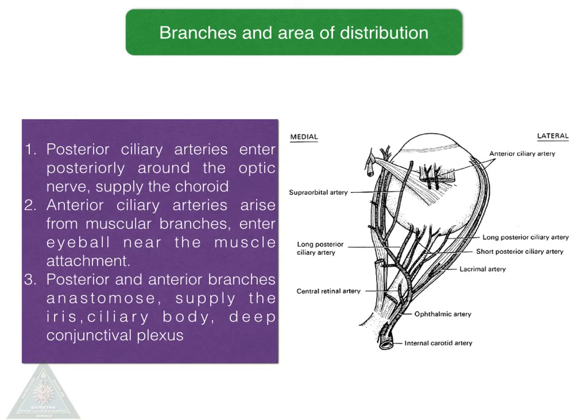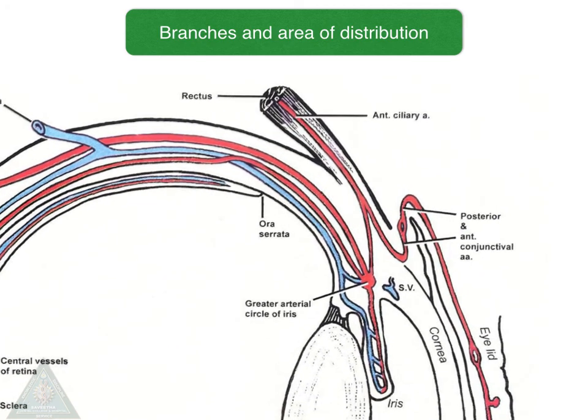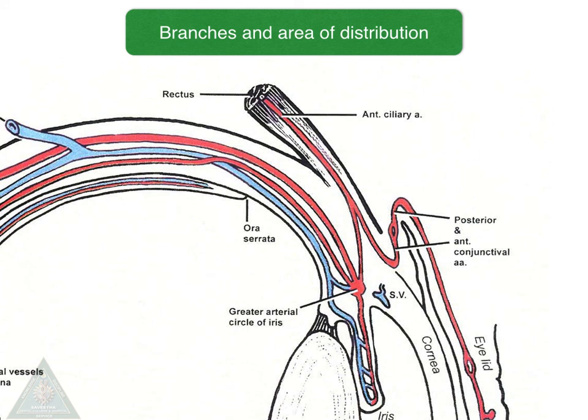The posterior ciliary arteries enter posteriorly around the optic nerve and supply the choroid, whereas the anterior ciliary artery arises from muscular branches and enters the eyeball near the muscle attachment. The posterior and anterior ciliary arteries anastomose and supply the iris, ciliary body, and the deep conjunctival plexus. We can see the great arterial circle of the iris, the posterior and anterior conjunctival arteries, and the anterior and posterior ciliary arteries.